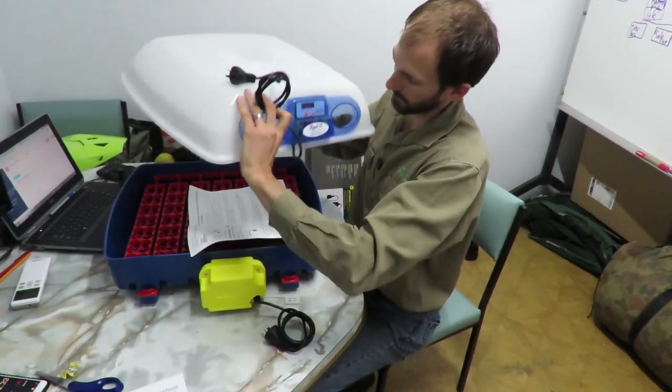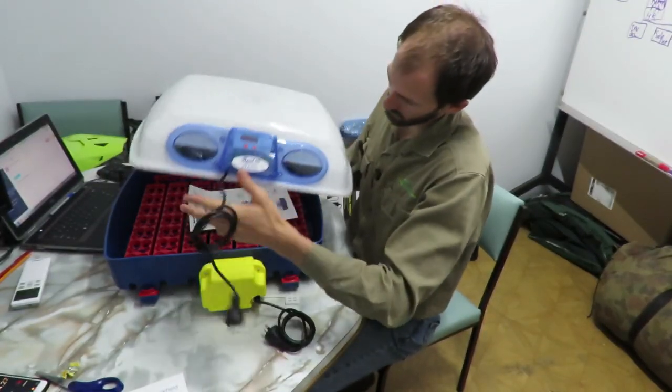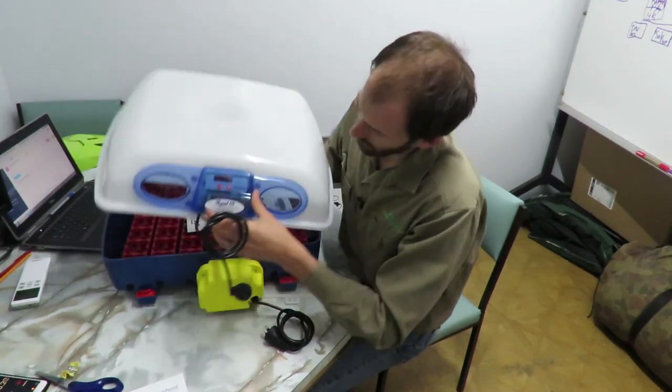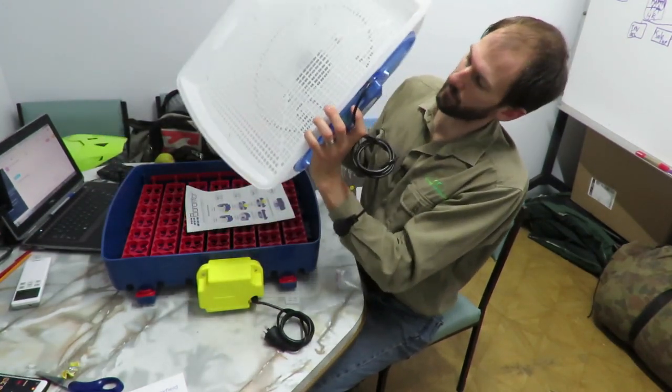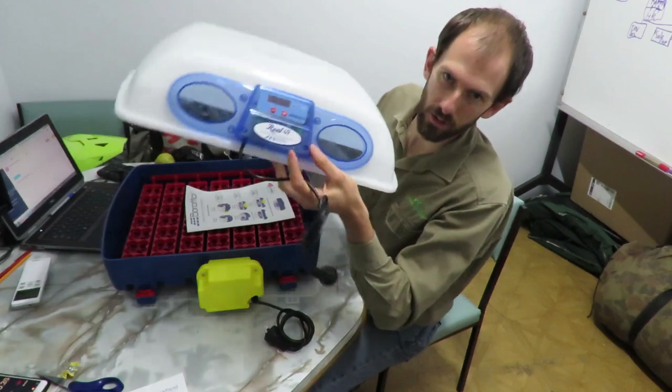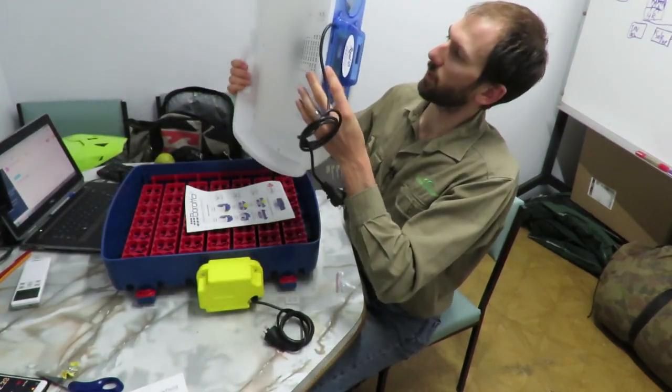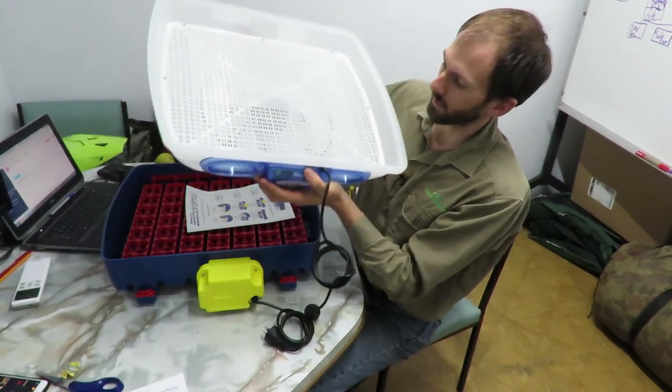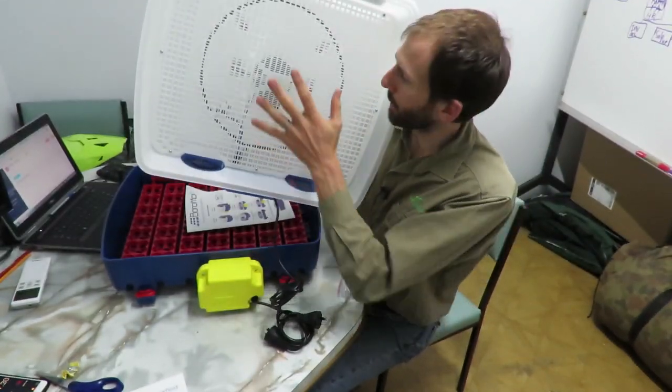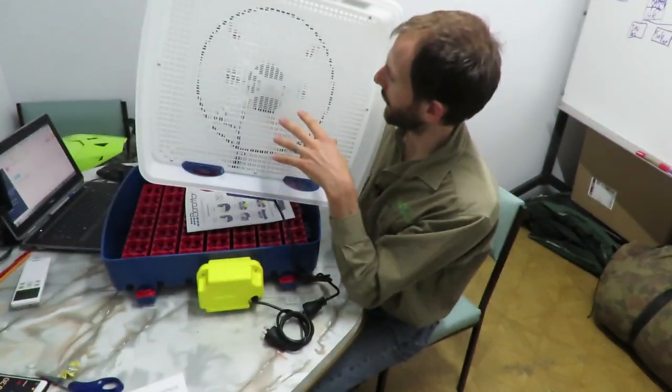So I want to show you the lid of the incubator. So the lid goes on there. Now you've got a display screen, we're going to plug that in soon, it's got all your electronics, it's all sealed in behind there, and up in the top of the lid, we're looking into the top of the lid, and it's got this tray, and I'm guessing this is so when you've got chickens in there, they're not putting their head up against, not that they could reach.